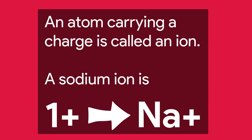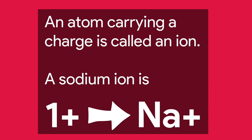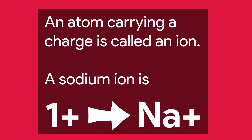If a sodium atom loses an electron, its charge falls out of balance. It ends up with 10 negative charges and 11 positive charges. An atom carrying a charge is called an ion. Because sodium loses an electron, it becomes positive. It's called a positive ion, or another word for it is a cation. A cation is a positive ion.